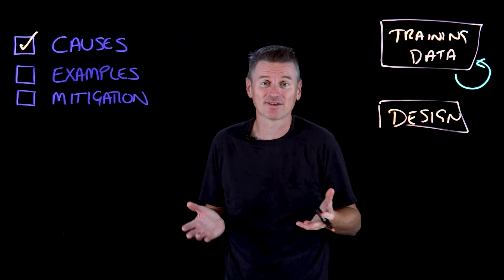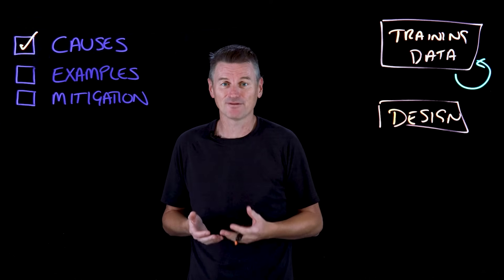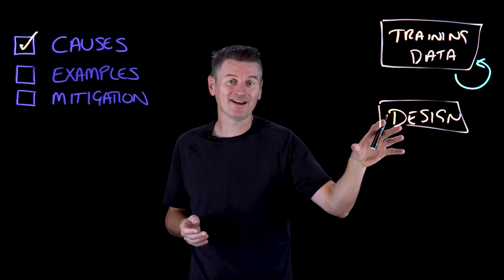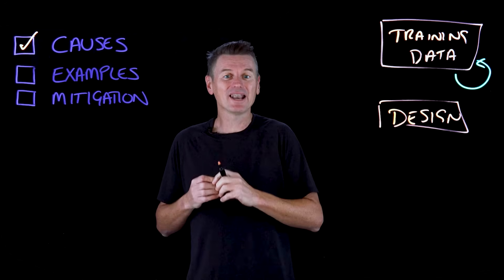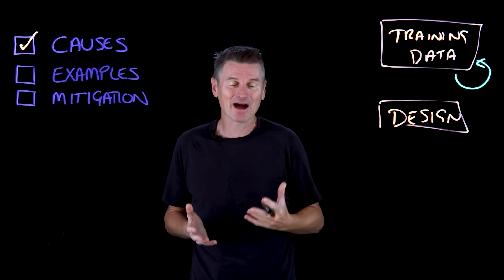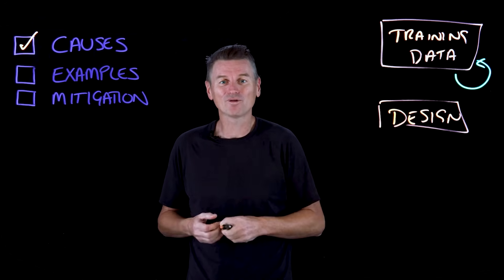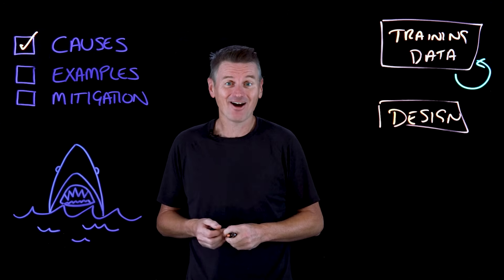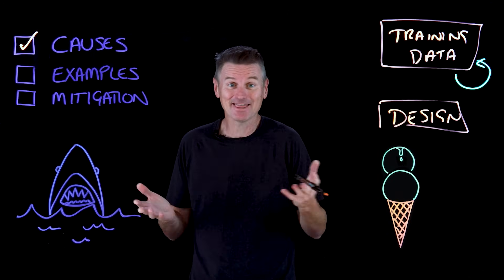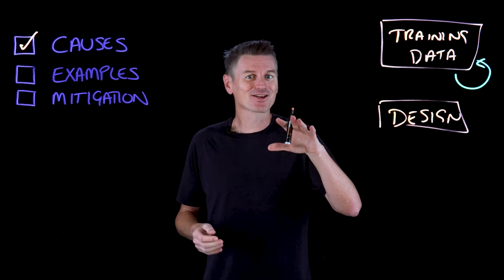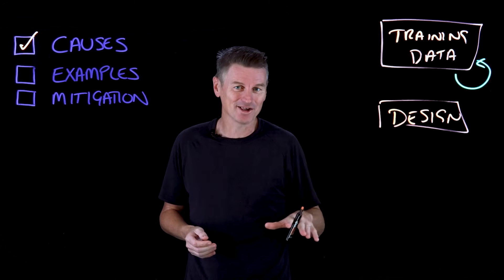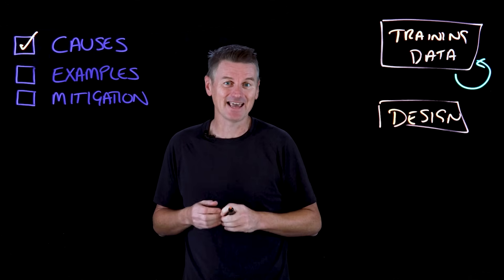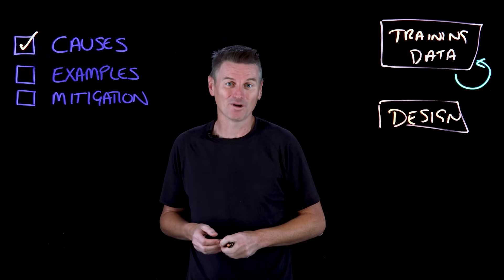Developers might embed the algorithm with subjective rules based on their own conscious or unconscious biases. Poor algorithmic design can also lead to correlation bias, such as an AI algorithm that determines a causal relationship between increased shark attacks and higher ice cream sales — they're both higher in the summer. But that's correlation, not causation, and an example of where the model failed to consider other factors in the data that may be of more importance.